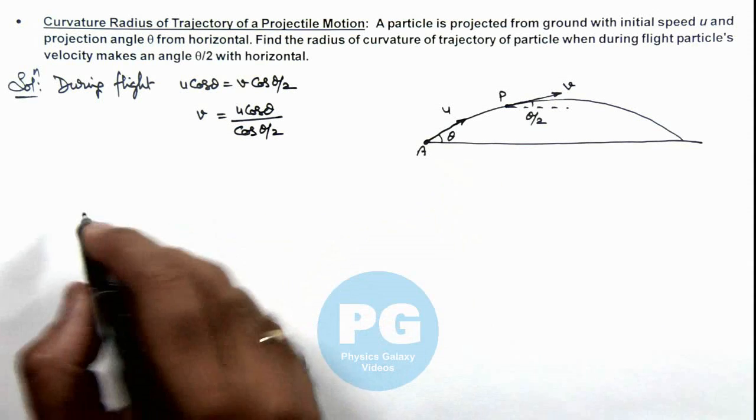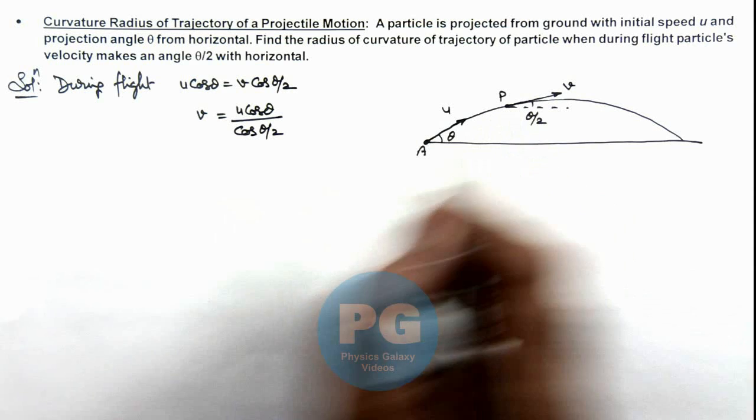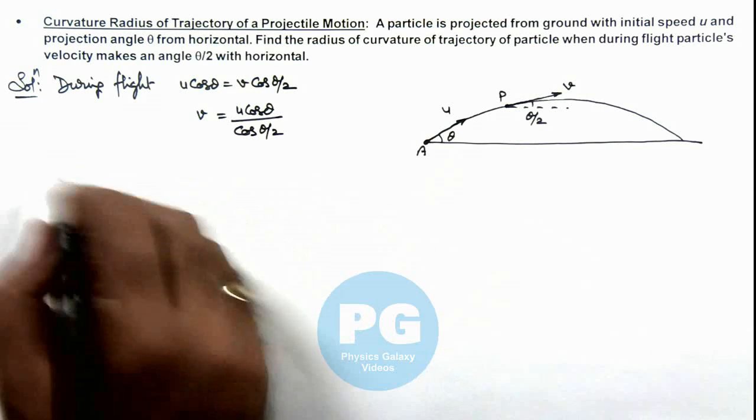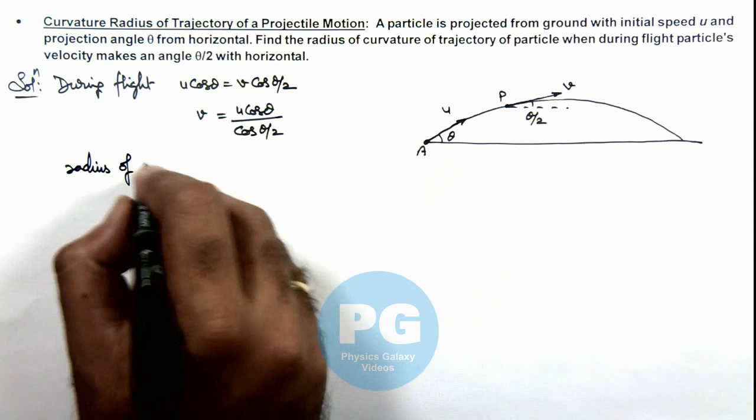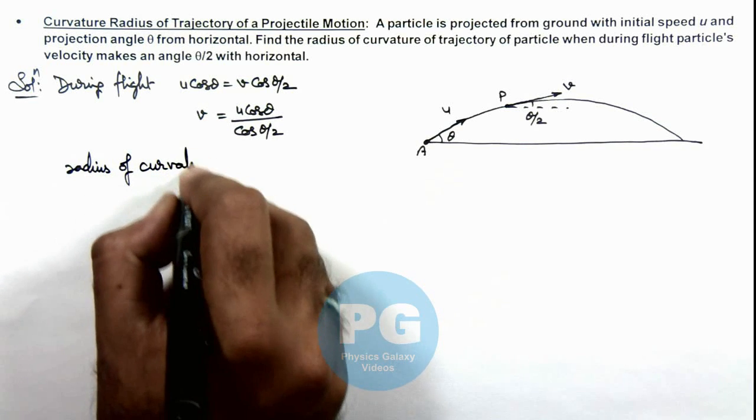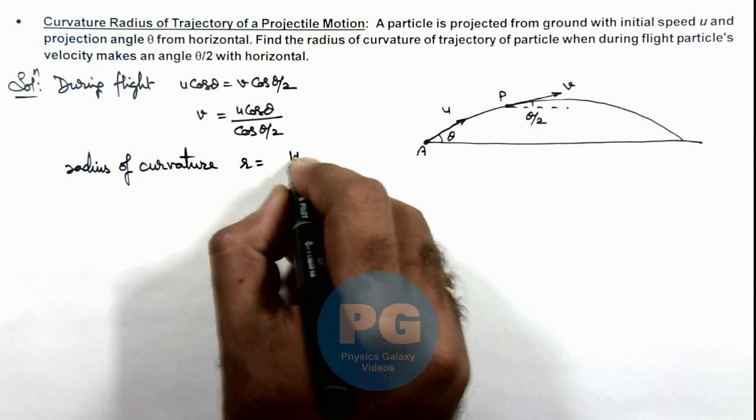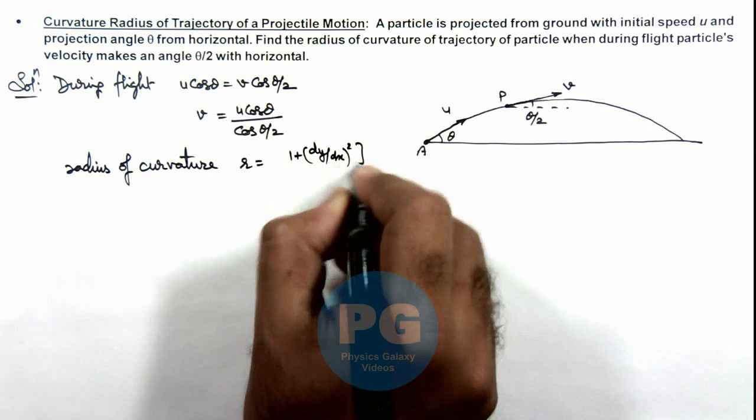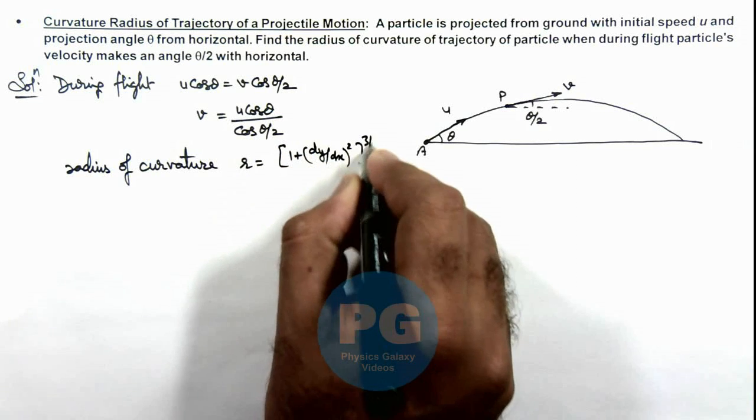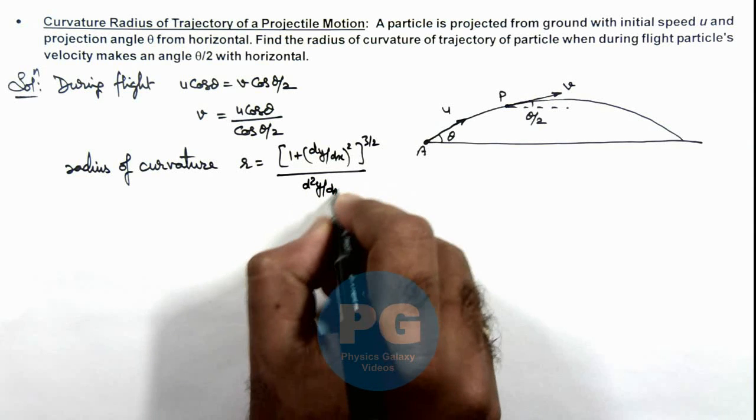Now if we wish to calculate the curvature radius of trajectory at point P, then the direct relation we have is: the radius of curvature for any trajectory is given as [1 + (dy/dx)²]^(3/2) divided by |d²y/dx²| magnitude.